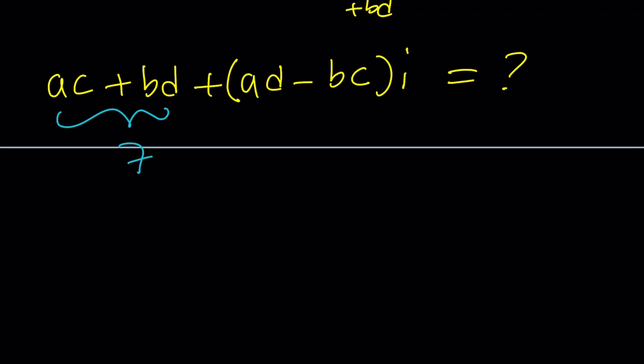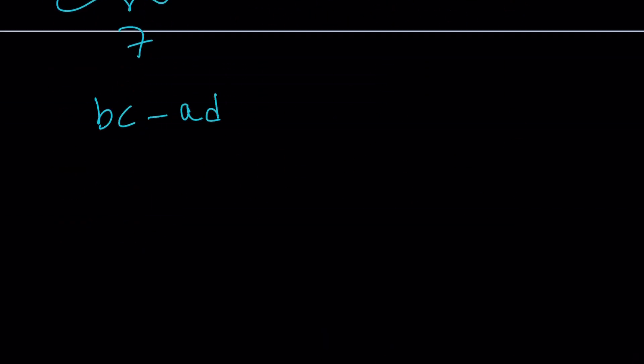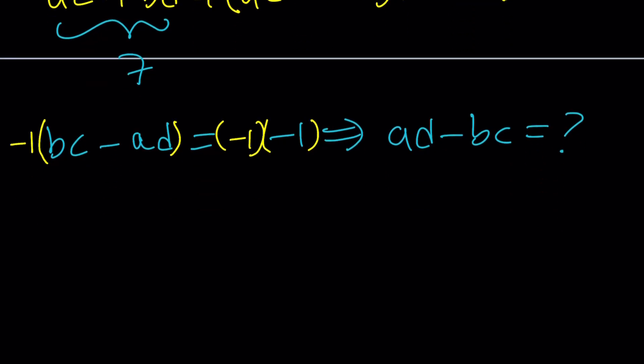What about ad minus bc? Do we know what it is? No. But we do know bc minus ad is negative 1. So the question is, if we know bc minus ad, can we find ad minus bc? The answer is yes, absolutely. You just have to negate it. If you multiply both sides by negative 1, that'll do the trick. When you multiply a difference by negative 1, you get the opposite. So this is going to be negative bc plus ad, or ad minus bc. So ad minus bc is 1.